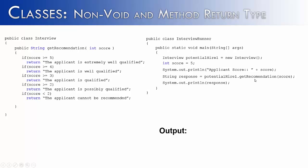We would get the response by calling the method, and then print out the response. It should say 'applicant score 5' and the response should say 'the applicant is extremely well qualified'. Unfortunately, we would get an error saying 'missing return statement'. You might want to yell at the computer — 'I have 5 return statements here, how can you give me a missing return statement error?' Well, the reason is: what if all of these if conditions were false? The computer wouldn't know what to return.